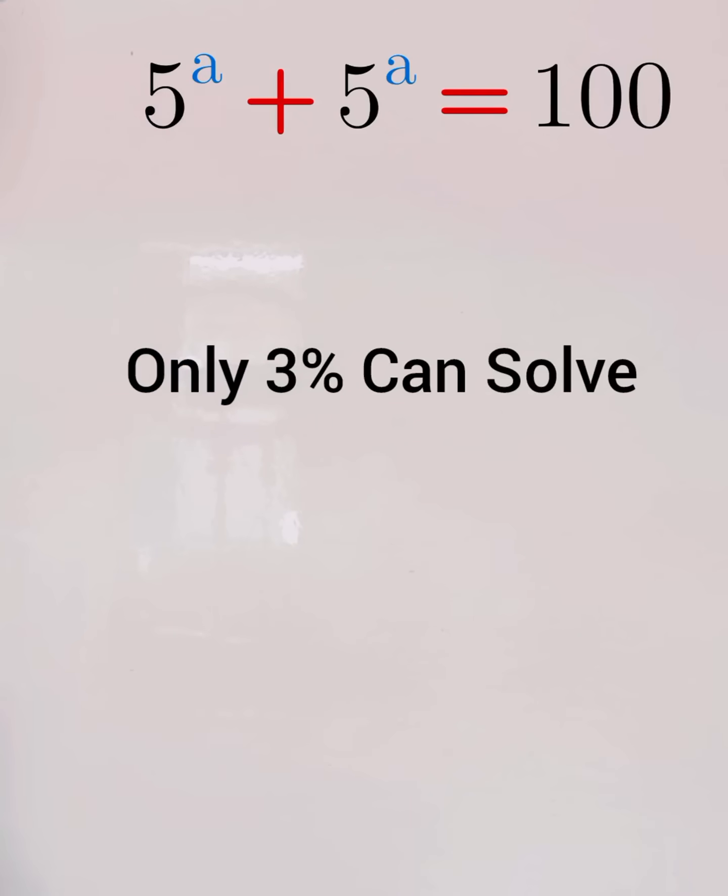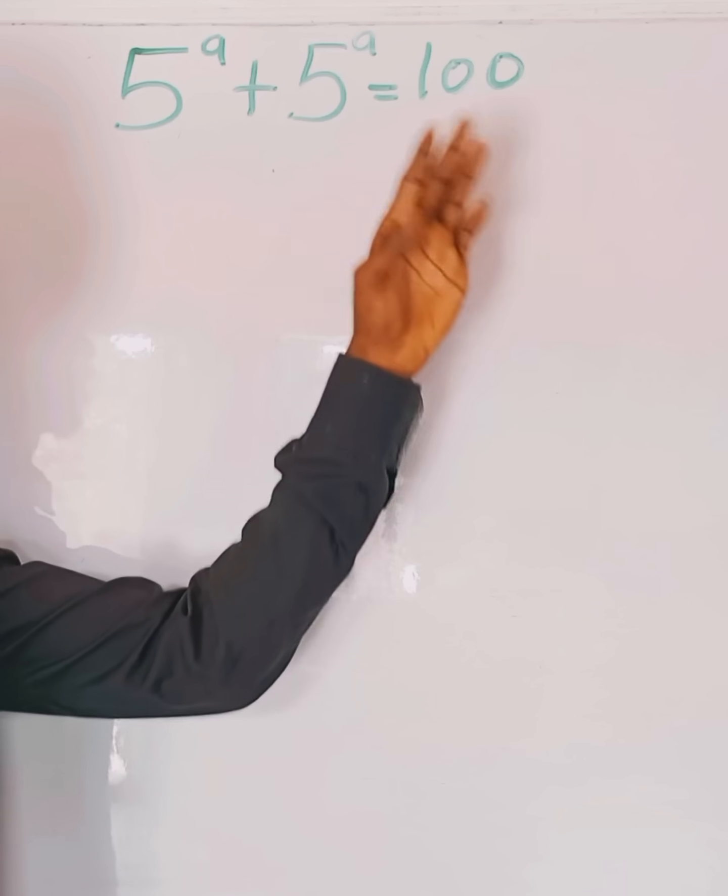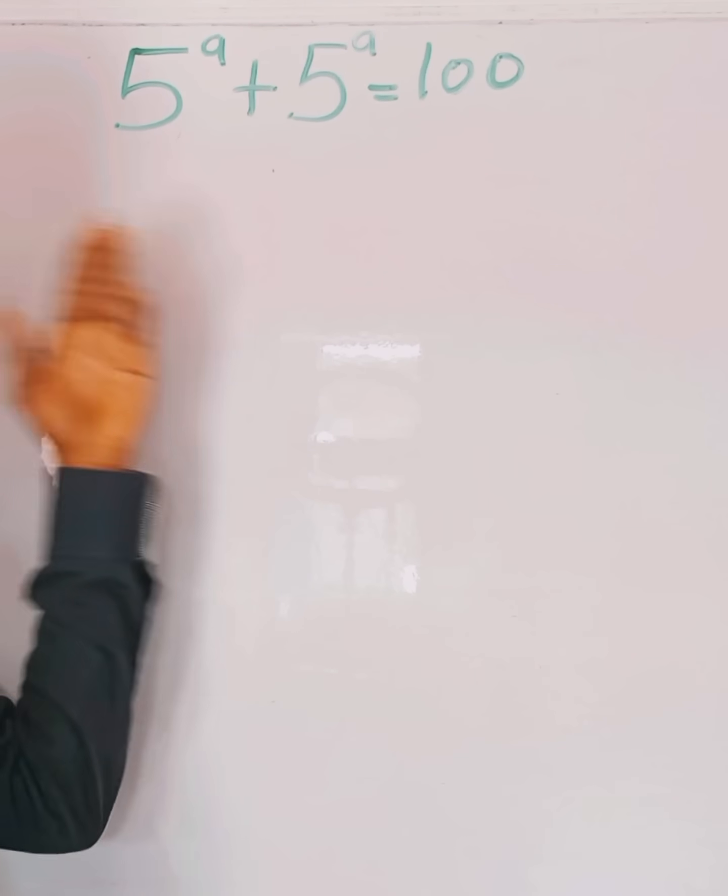Can you solve this exponential equation? Now, this equation is actually very simple. 5 to the power of a plus 5 to the power of a equals 100. What is the value of a?